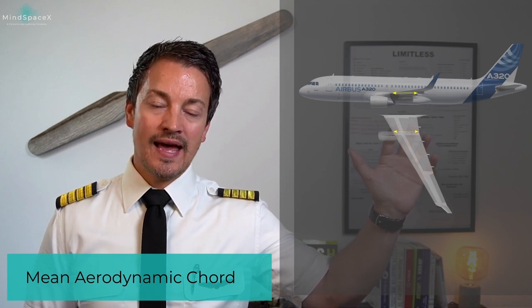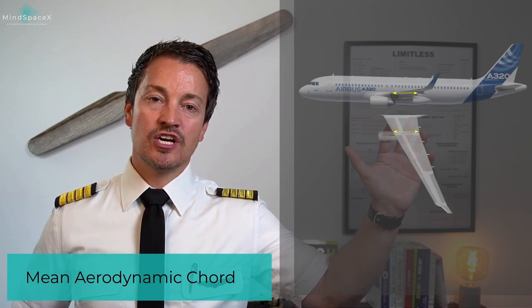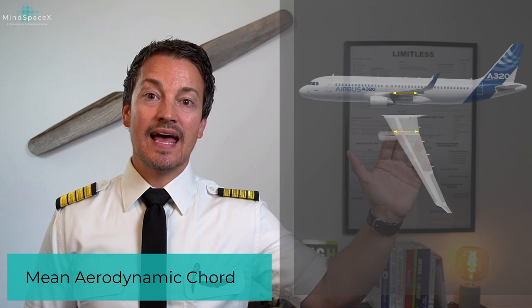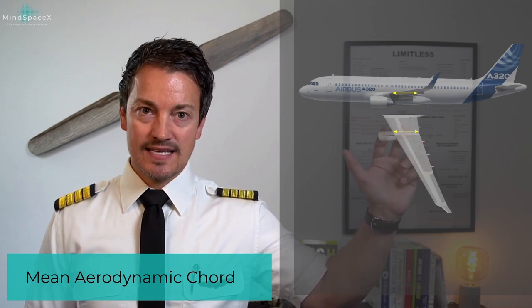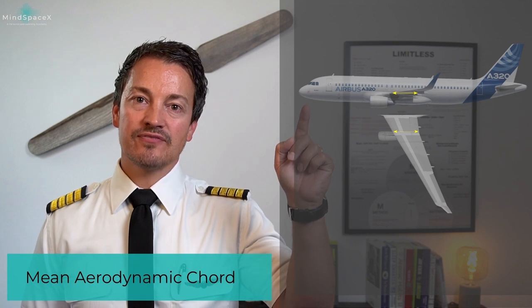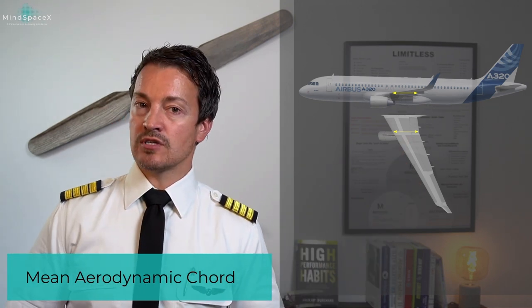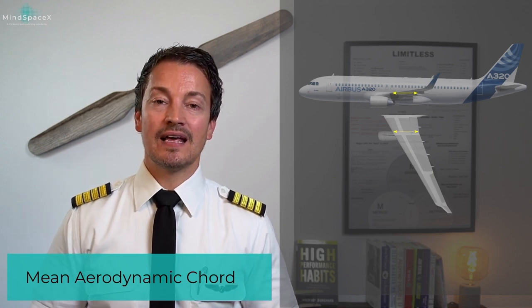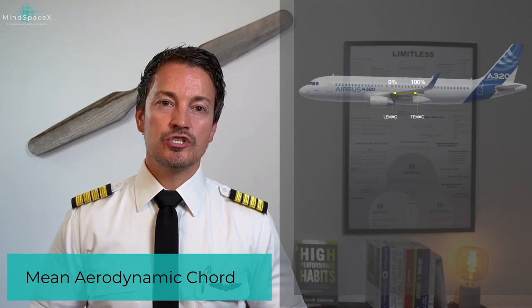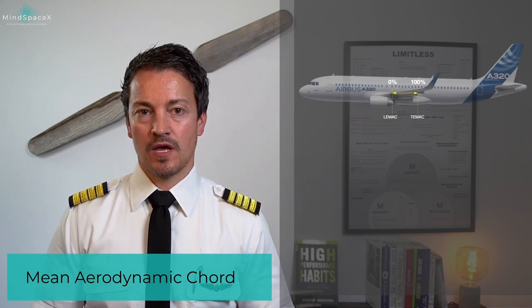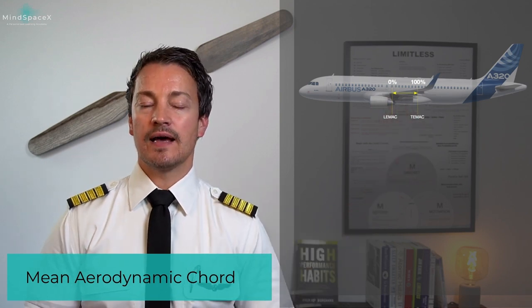The mean aerodynamic chord is the chord line on that wing that produces the average lift. On this specific aircraft, the mean aerodynamic chord is 4.193 meters long from leading edge to trailing edge, and its leading edge is situated 16.31 meters aft of the aircraft's nose. Knowing that distance and the chord length, you can calculate the center of gravity position. However, we don't express the CG as a distance — we reference it as a percentage.